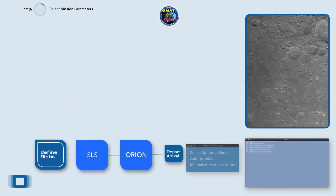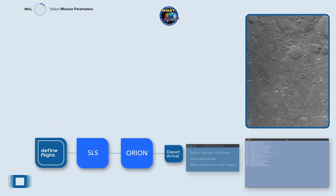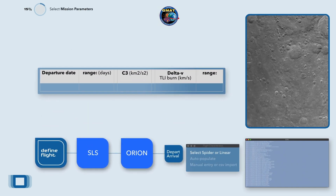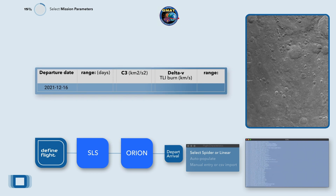Launch date target is December 16th, 2021, and I need you to run a range of plus or minus 30 days. Departure characteristic energy is negative 0.99. Start with a delta-V of 3 for the TLI burn and run plus or minus 0.3.